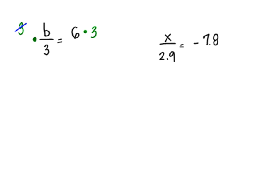A 3 in the top and the 3 in the bottom cancel, leaving you with b. On the right hand side, you have 6 times 3 and 6 times 3 is 18. So your answer is b equals 18.